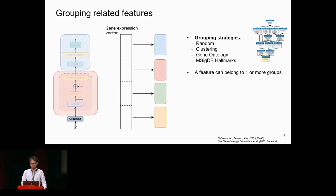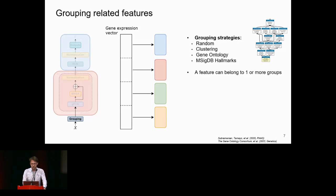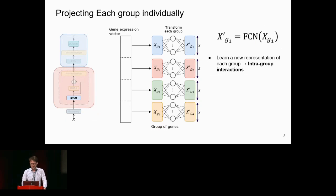In detail: given a patient's gene expression vector, we first assign each feature to a specific group. This assignment can be done through different strategies — we tested random clustering strategies to have groups where genes with similar expression patterns are together, and groups based on knowledge like gene ontology or the hallmarks. The architecture is flexible and can adapt to any grouping, and a feature can belong to more than one group.